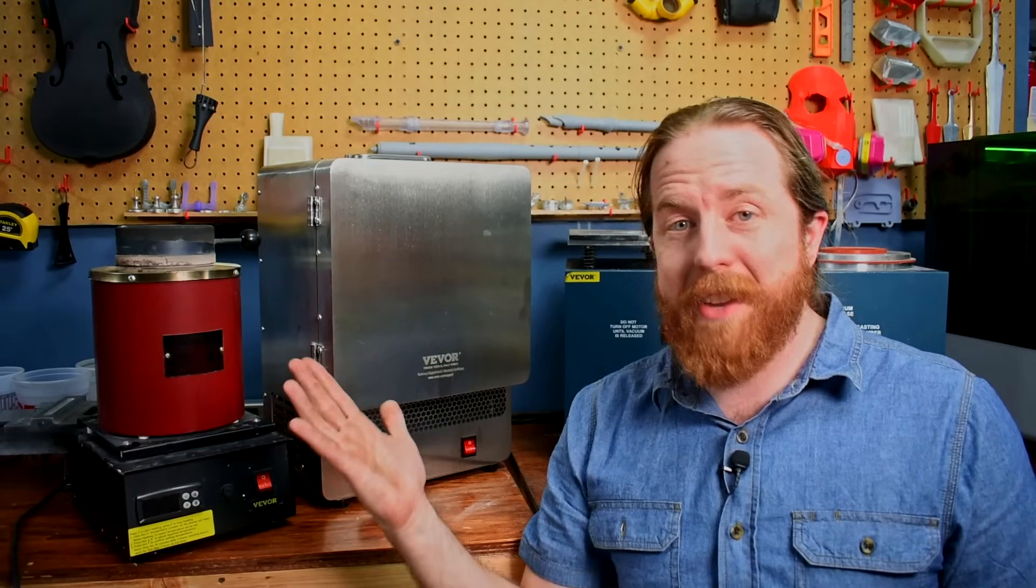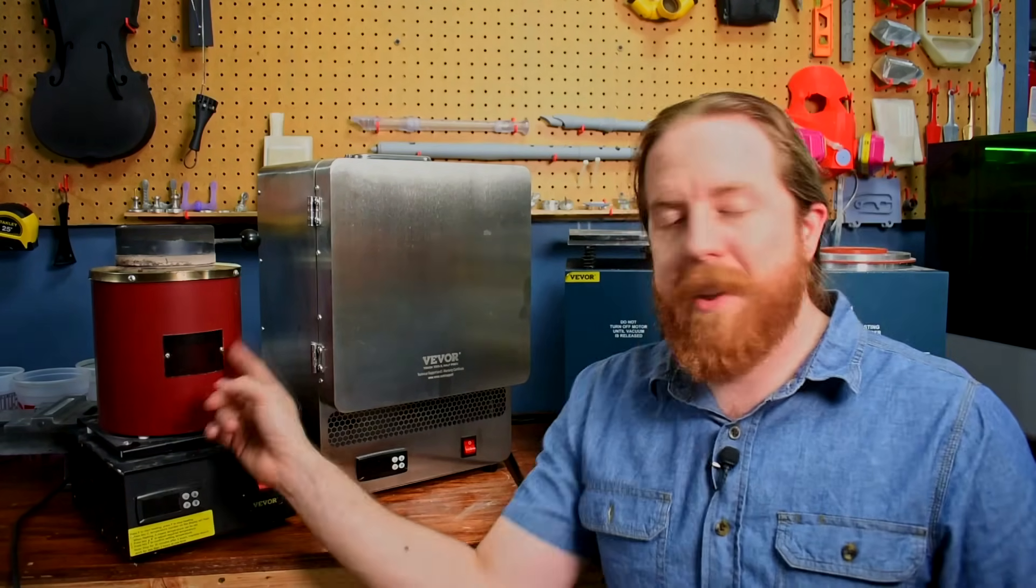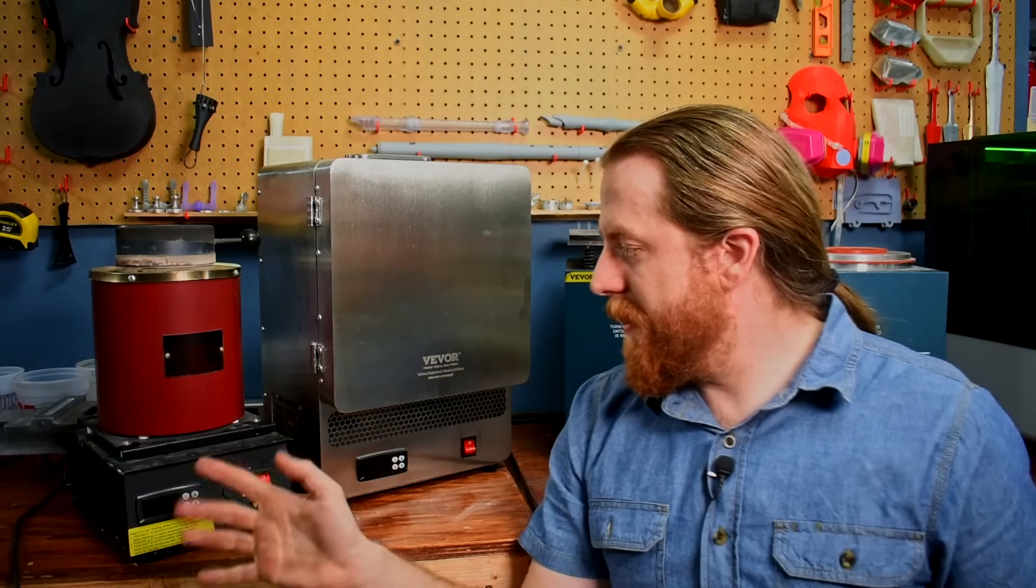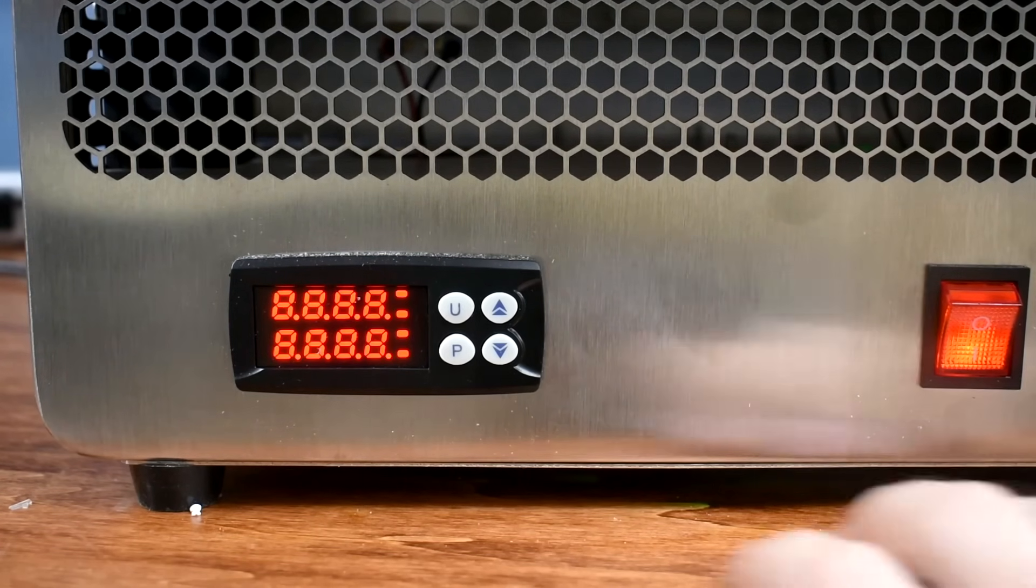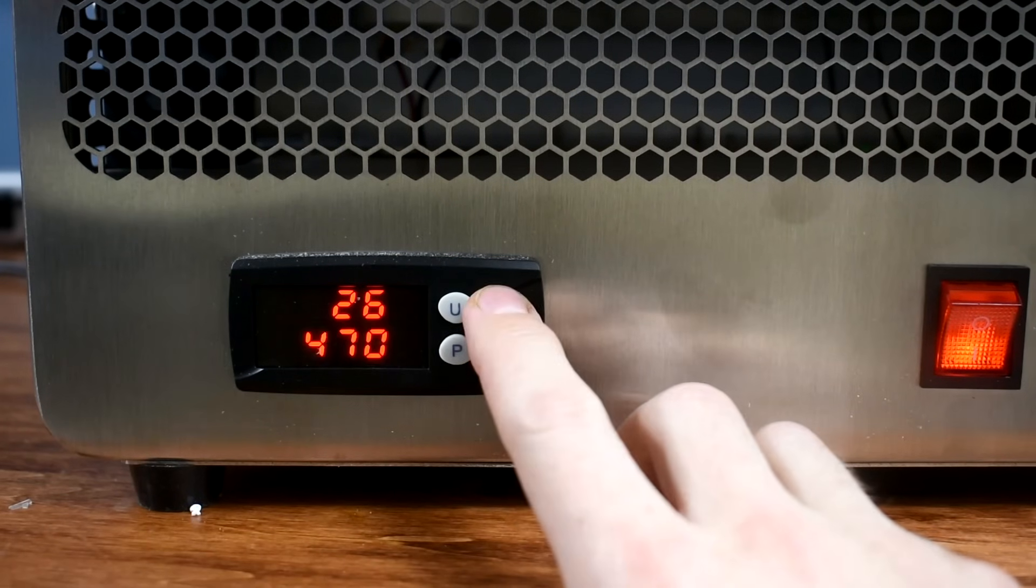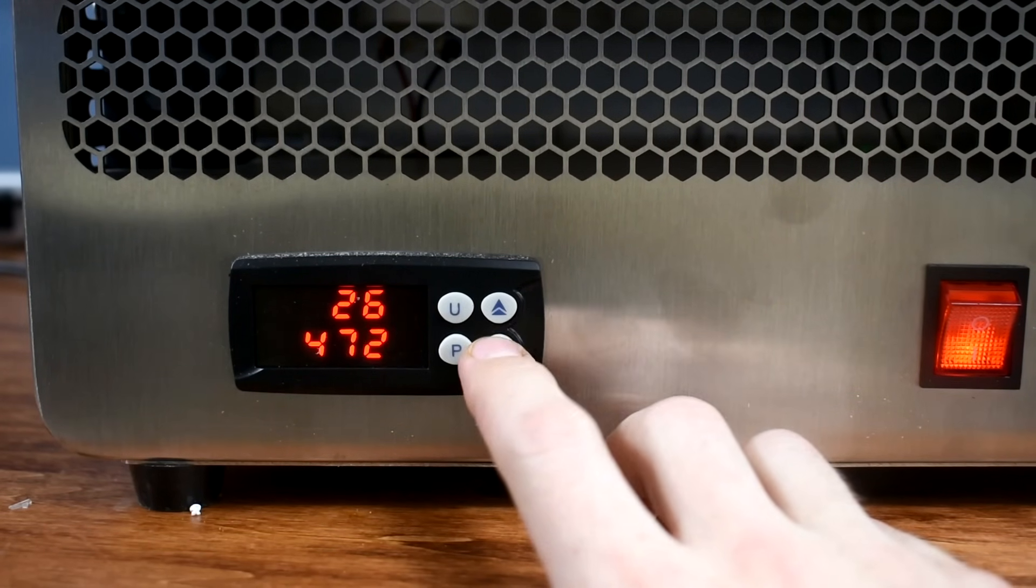First off, a pro. It's pretty easy to use. If you have one of these electric furnaces that I've shown you before, it's the same. It looks like exactly the same controller. It's a thermocouple inside. You flick the switch. You click the U. Then set the thing in Celsius.